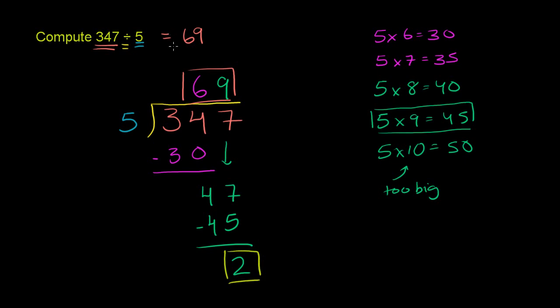There is a remainder right here. So it equals 69, and sometimes you'll see it written as remainder 2, or sometimes it's a capital R. Sometimes people will write out the word remainder. So 5 goes into 347 sixty-nine times, but you're going to have 2 left over.